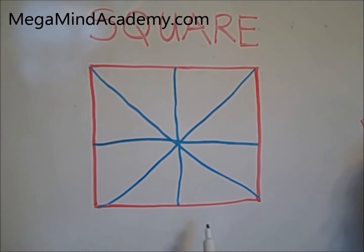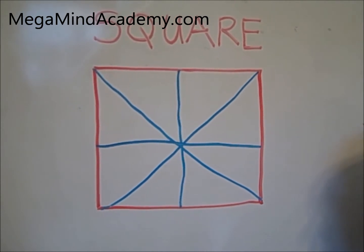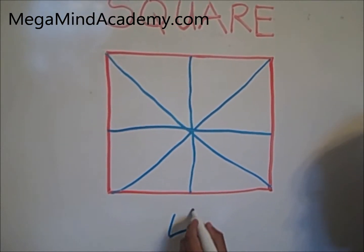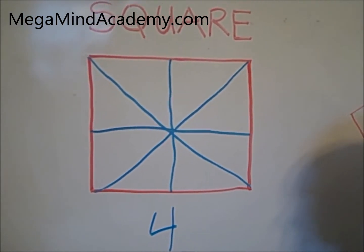In this square, there are four lines of symmetry.